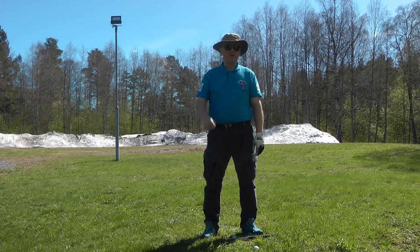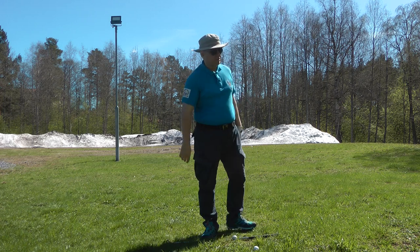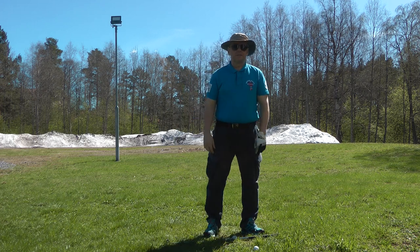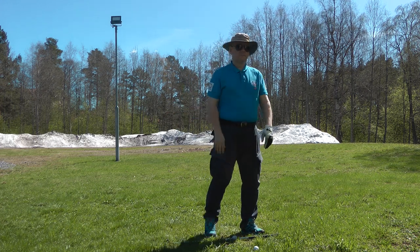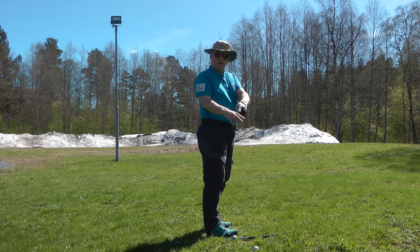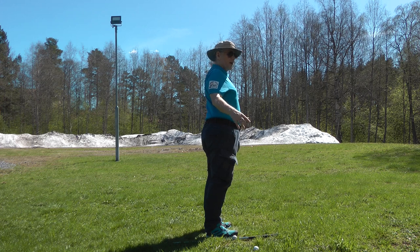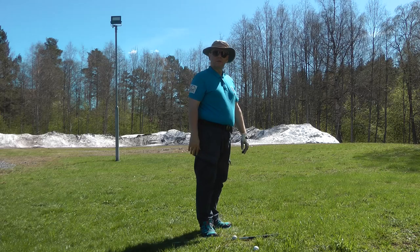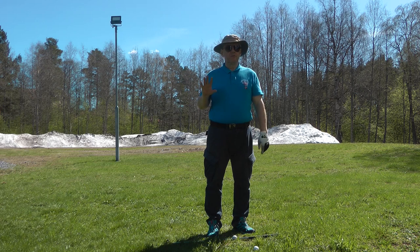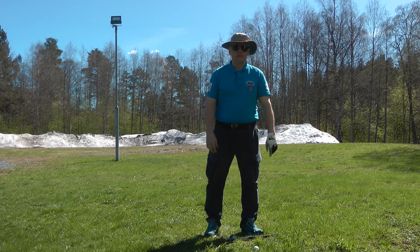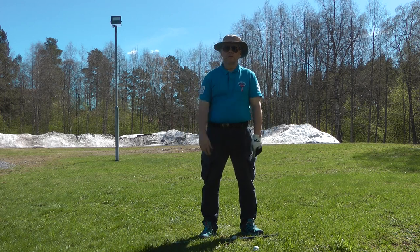What you do in the takeaway is learn to isolate three different movements. The first thing is the scapula — or right shoulder — contraction. The shoulder blade here, you contract that. That means my arm, when it goes into that position, will have the proper position. I can also contract the scapula so my arm goes into a different position, which is not correct. So what I want to do is isolate this motion — you don't need to do anything else with the body.